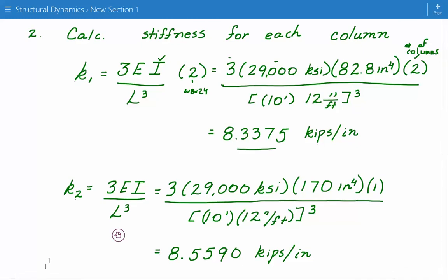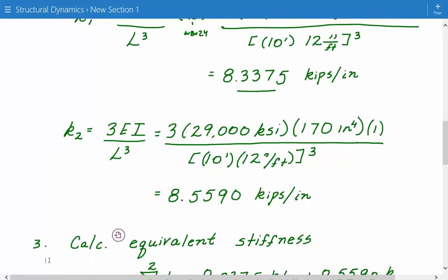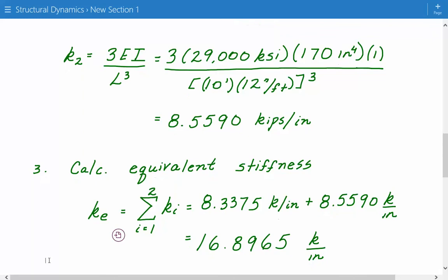Once we have the individual stiffnesses for the columns, we have to calculate the equivalent stiffness. So these three columns represent springs in parallel. So when you have springs in parallel, you simply just add the stiffnesses. So here's our expression for K equivalent over here. We just take the summation of the stiffnesses. So we add K1, which is for the W8 by 24, plus we add K2, which represents the stiffness for W10 by 33.